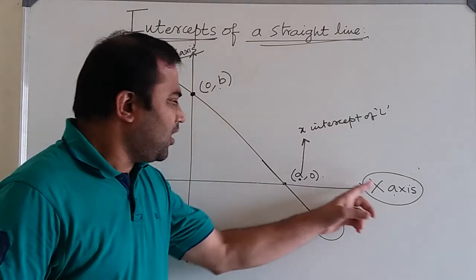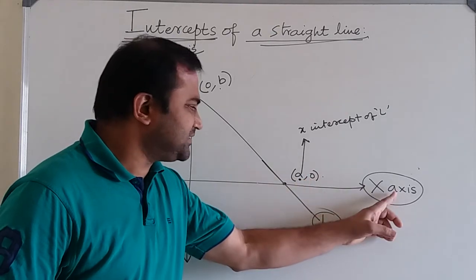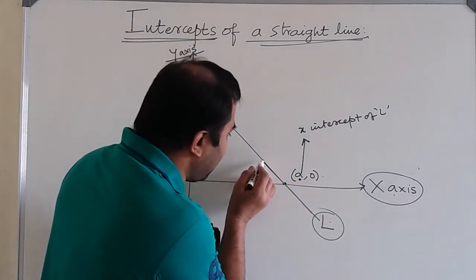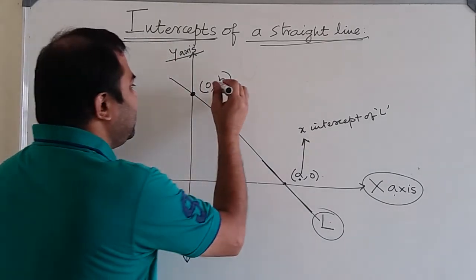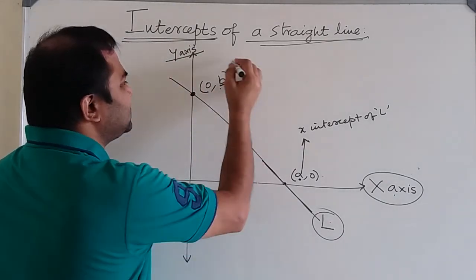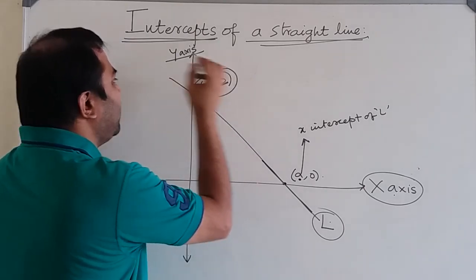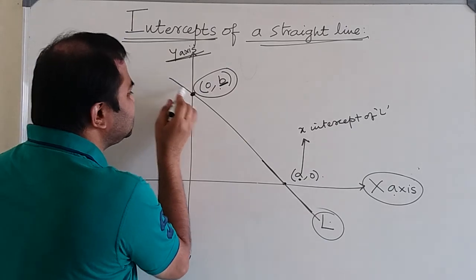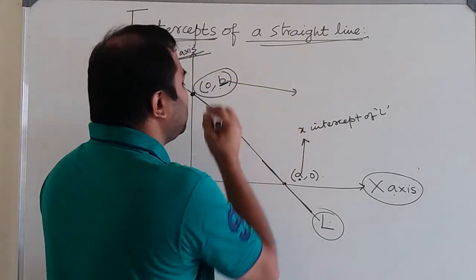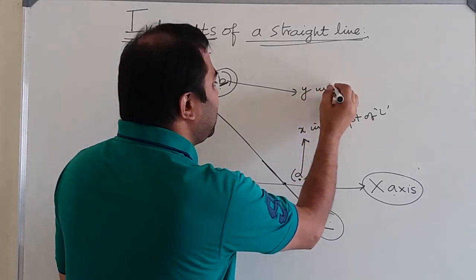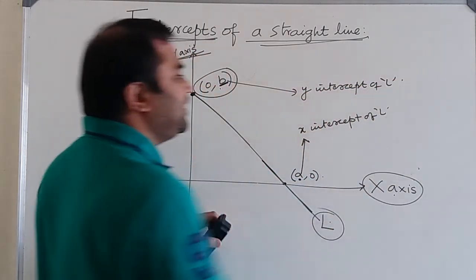So x-intercept means the x-coordinate in the point (a, 0) which is lying on the x-axis and through which point the line is passing. Similarly, the y-intercept of the straight line L is defined as the y-coordinate in the point lying on the y-axis through which the line is passing.